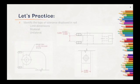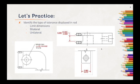So let's do a little bit of practice. Identify the type of tolerance displayed in red. Your options are to identify it as a limit dimension, a bilateral tolerance, or a unilateral tolerance. I'll give you some time to figure this out, and then we'll go over the answers together. If you need more time, pause the video before we go over the answers.